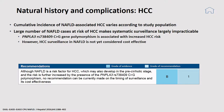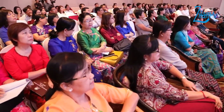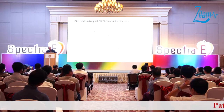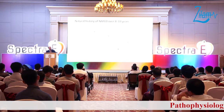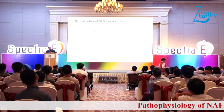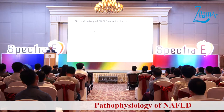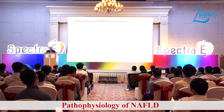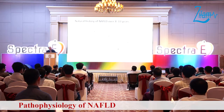NAFLD can be complicated by NASH. Simple steatosis is progressive to NASH with mild fibrosis, but some cases can progress very fast to advanced fibrosis and even from mild fibrosis to cirrhosis. The natural history is not linear or predictable — in some cases it can be very aggressive, leading to cirrhosis and even hepatocellular carcinoma. HCC can also arise from NASH even before cirrhosis.